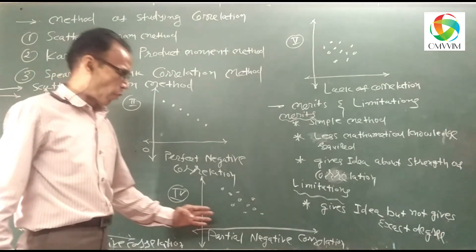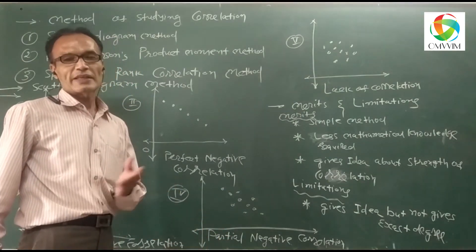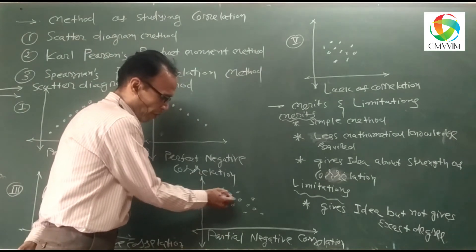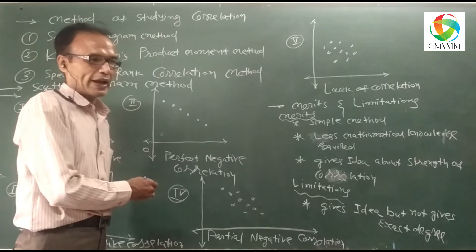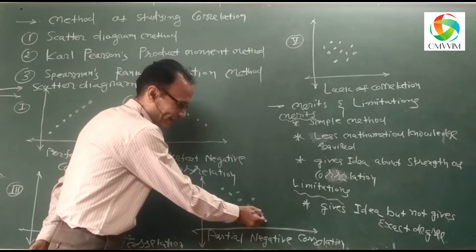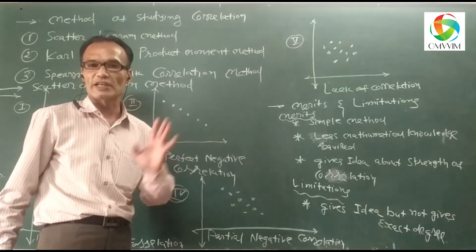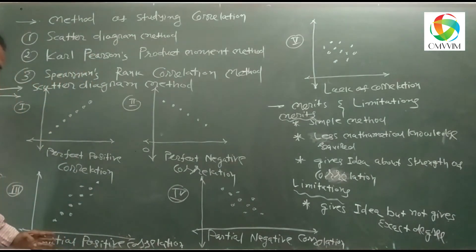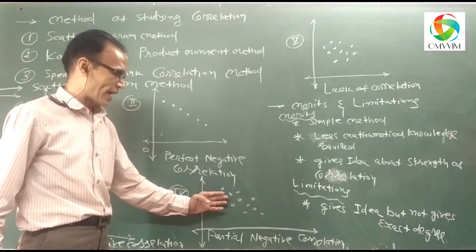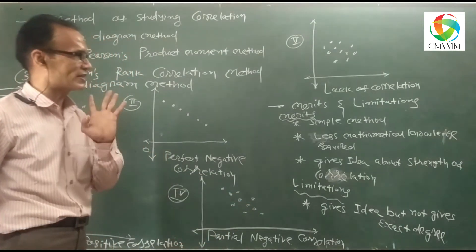The fourth diagram: x and y variables are plotted on graph paper, and all points are not in one straight line but around one straight line, and all points go from left to right in decreasing order. The figure obtained is called Partial Negative Correlation between two variables.